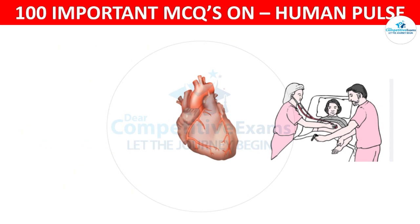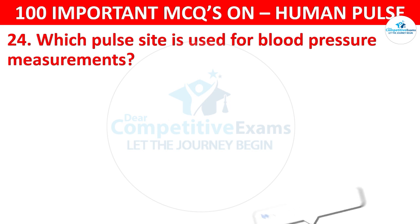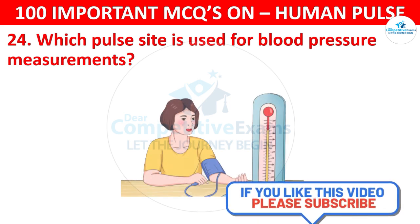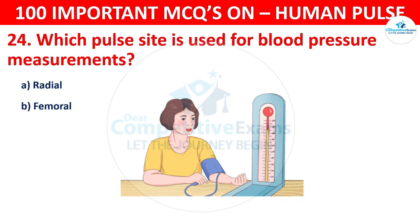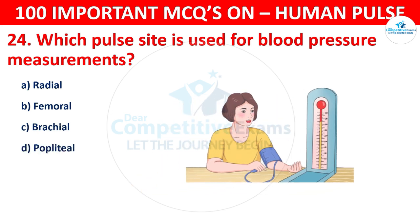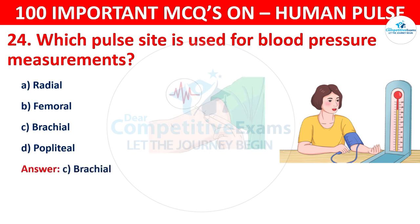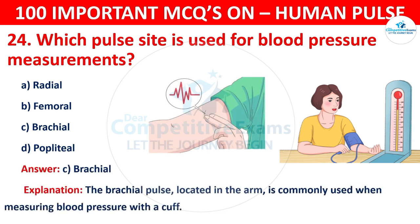Question number 24: Which pulse site is used for blood pressure measurements? Your options are: Radial, Femoral, Brachial, or Popliteal. The correct answer is C, that is brachial. The brachial pulse, located in the arm, is commonly used when measuring blood pressure with a cuff.